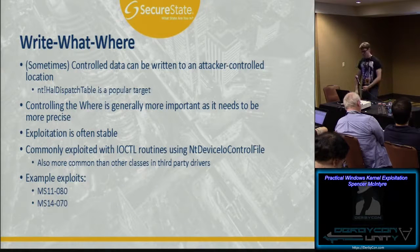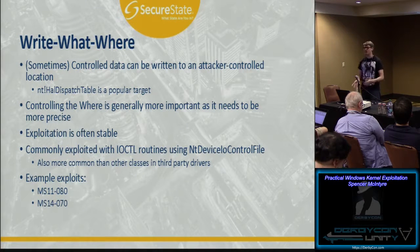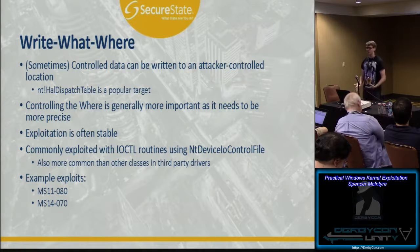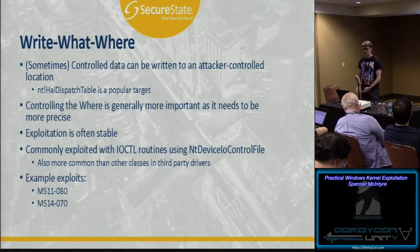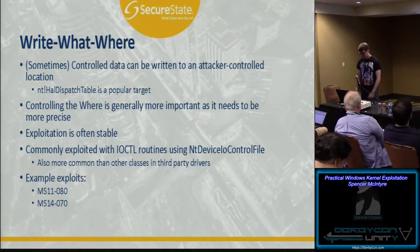First up: write-what-where. What is it? It is when attacker-controlled data can be written to an attacker-controlled location. This is fantastic because an attacker can leverage this by writing data to a location they control. It's usually more important for the attacker to control the location of the data more than what the data actually is. Of course if they have full control over both, getting code execution is often trivial because there are many well-documented techniques for corrupting Windows structures to give you code execution.